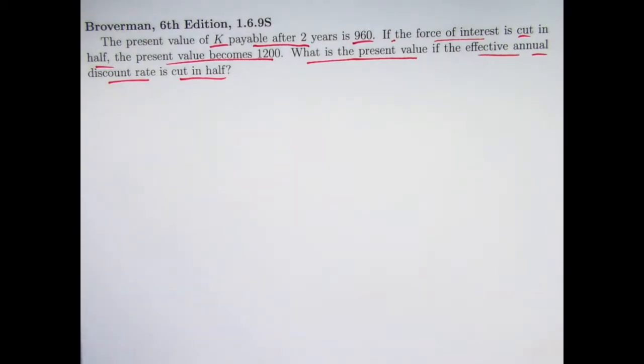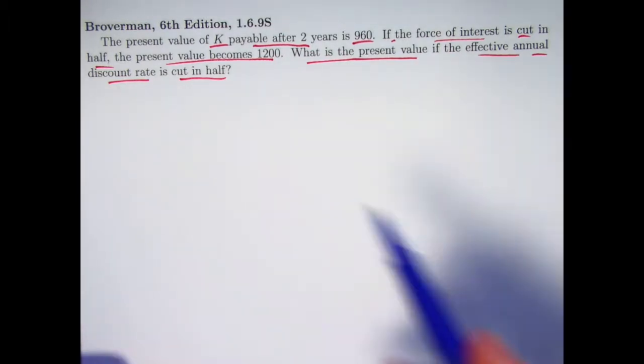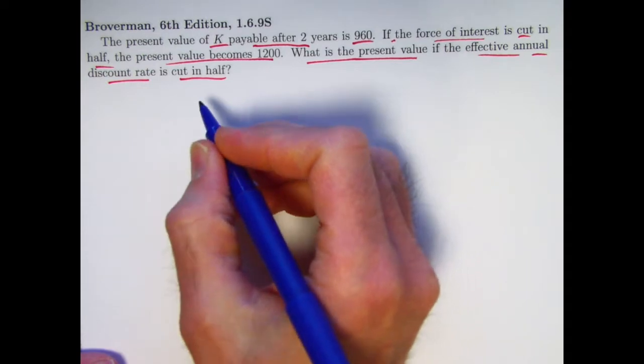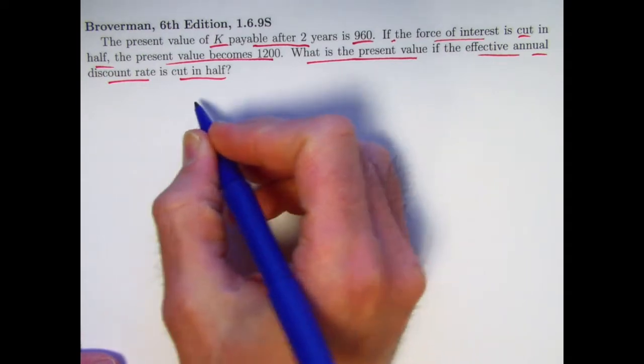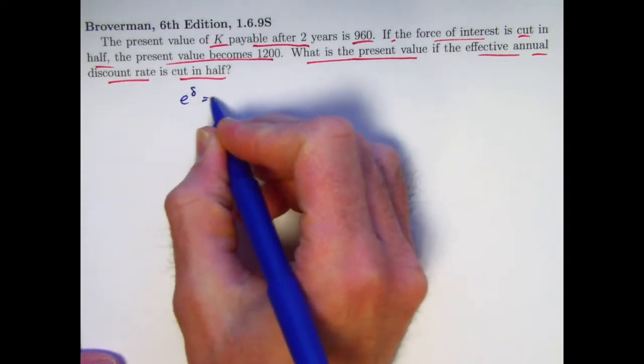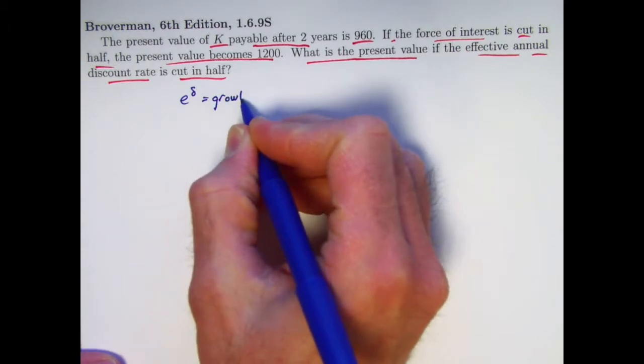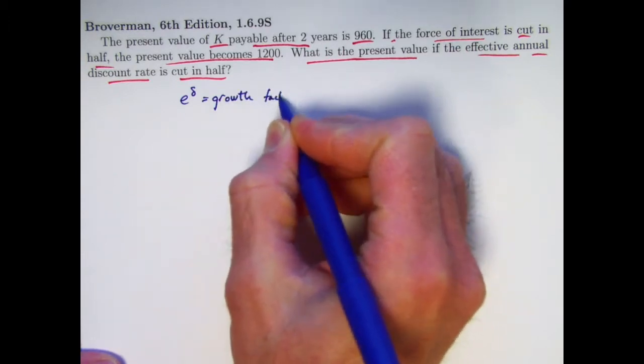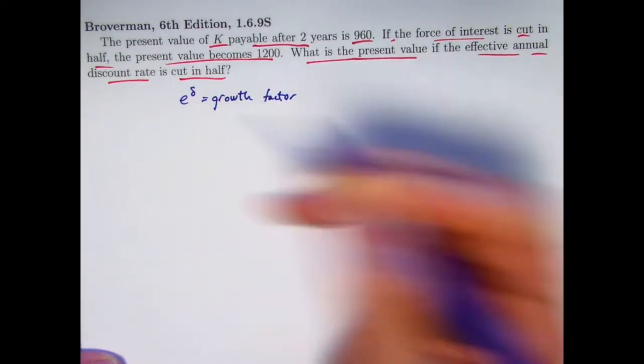All right. So again, not too long of a statement there, but there's really a lot going on here. You have to think about. First of all, delta would be the force of interest and e to the delta would be the growth factor. The one year annual growth factor would equal 1 plus i.